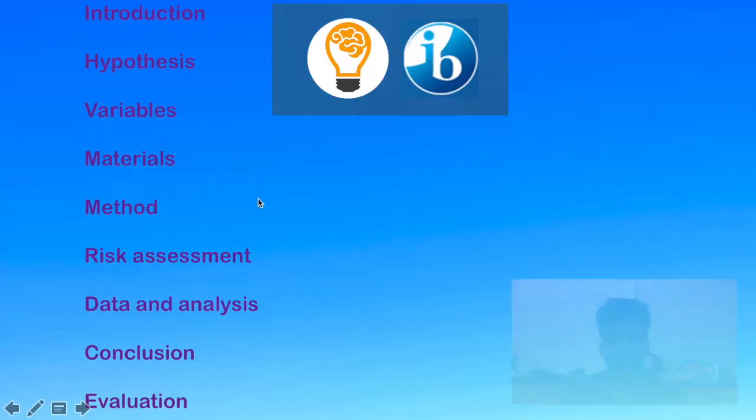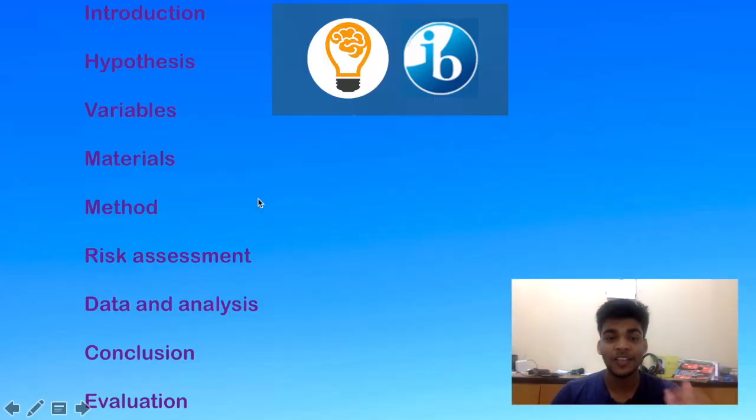Use the structure, use the ideas, get the basic idea of how I did it and you can emulate that. There's no problem with that, just no plagiarism, no copy-paste. The structure for my IA was: introduction, hypotheses, variables (independent, dependent, controlled), then materials, method, risk assessment, data and analysis, conclusion, and evaluation.